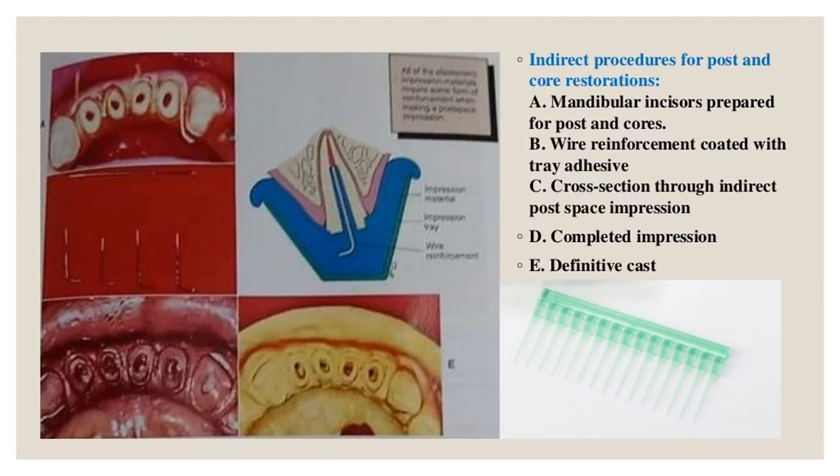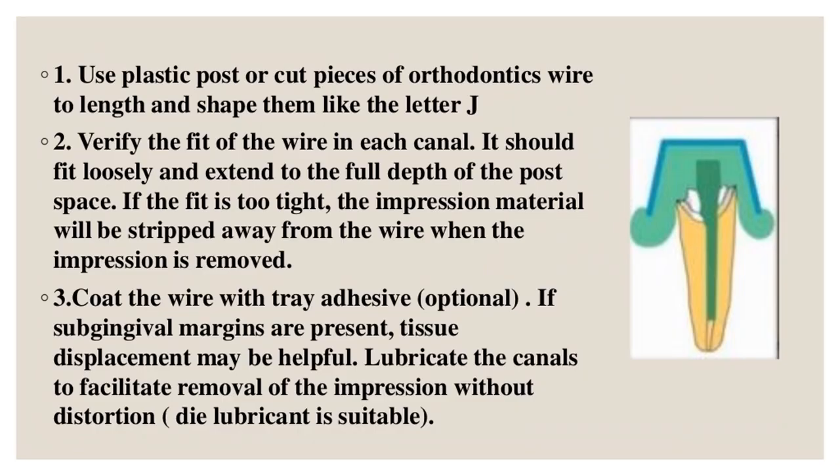Indirect procedures for post and core: use plastic posts or cut pieces of orthodontic wire to length and shape them like the letter J. Verify the fit of the wire in each canal — it should fit loosely and extend to the full depth of the post space. If the fit is too tight, the impression material will be stripped away from the wire when the impression is removed. Coat the wire with tray adhesive (optional). If subgingival margins are present, tissue displacement may be helpful; lubricate the canals to facilitate removal without distortion.